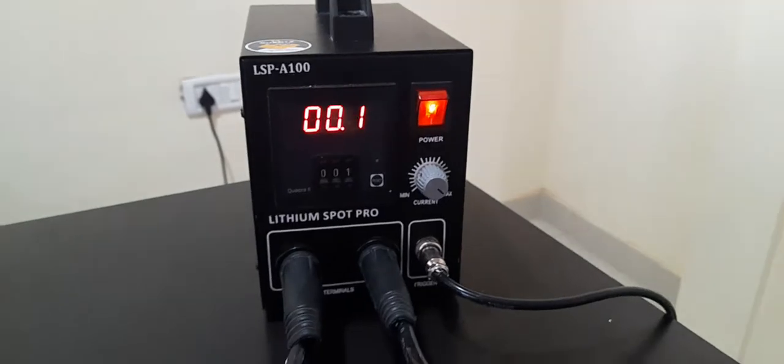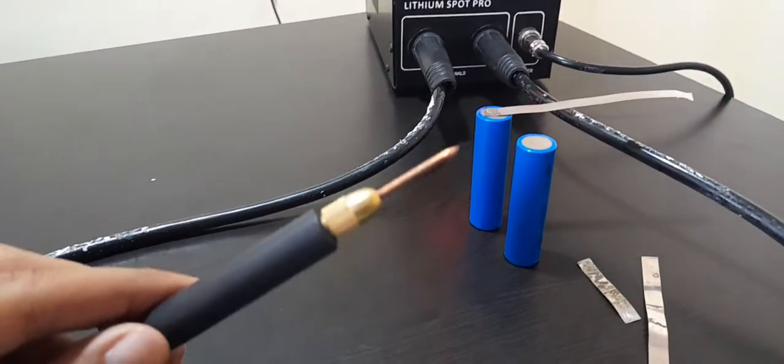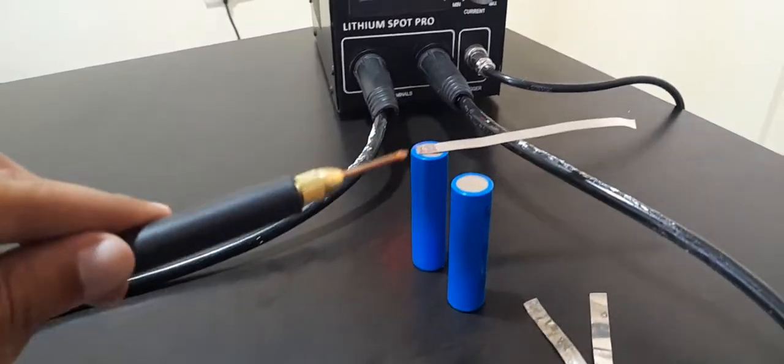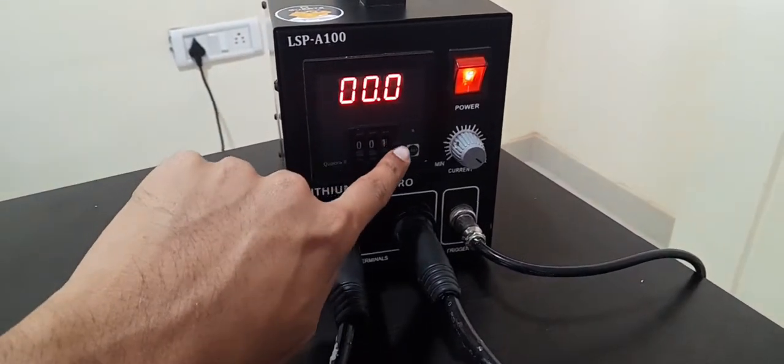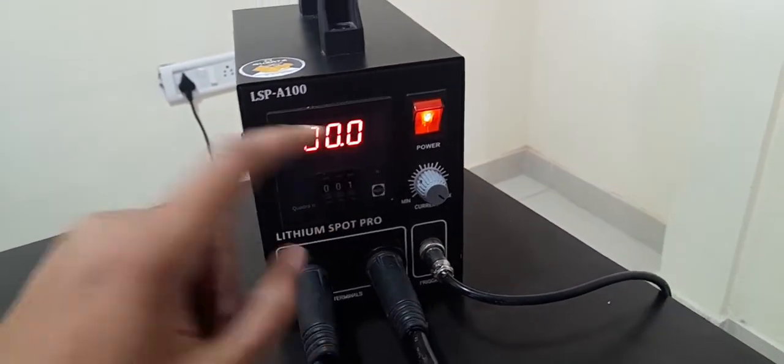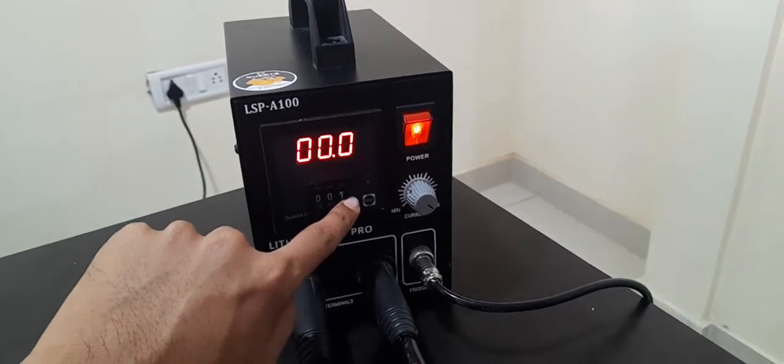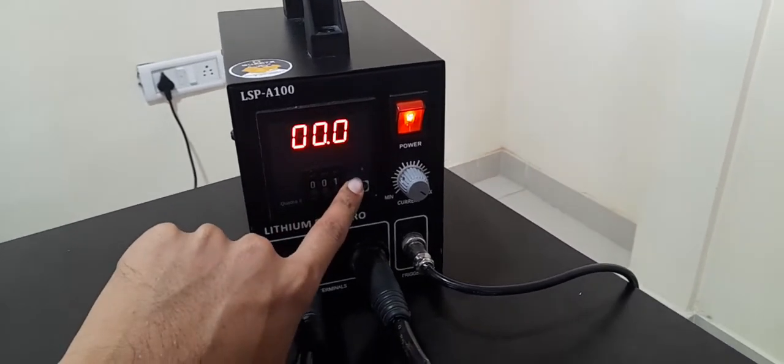Now to trigger the machine, all you have to do is place your spot welding needle on the correct place and then press this pedal to trigger the machine. When you press the pedal, you can see that the LED here turned on and turned off quickly, showing that the weld happened for a short duration.